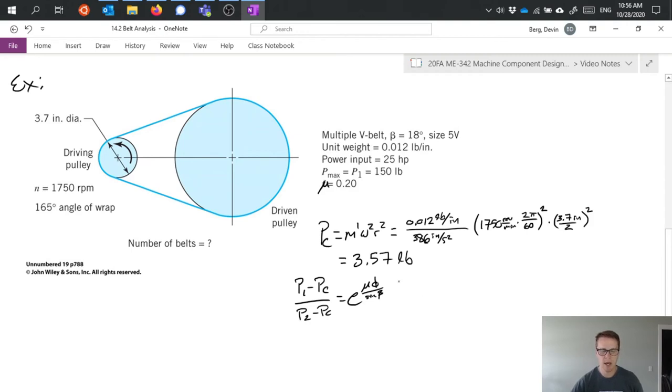We've specified that P1 or our maximum tension is 150 pounds so we can substitute that in for P1. Now we don't have P2 so in this case that's actually what we're solving for is this P2 which gives us an understanding of what's going on.